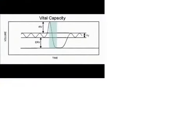The vital capacity is the amount of gas that can be exhaled after a maximal inspiration. What you would do is take a big deep breath all the way in, and then blow it all the way out as far as you can, and that would be the vital capacity. It includes the inspiratory reserve volume, tidal volume, and expiratory reserve volume.